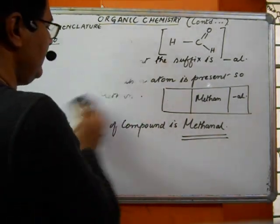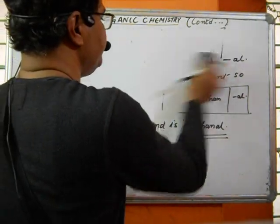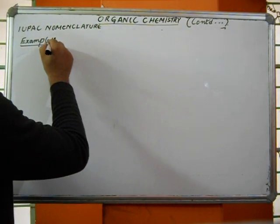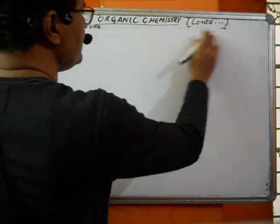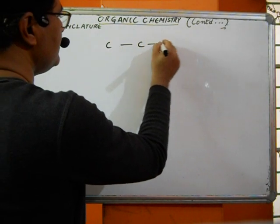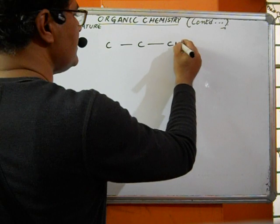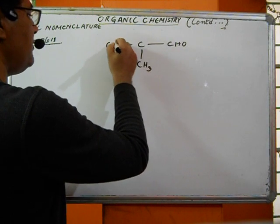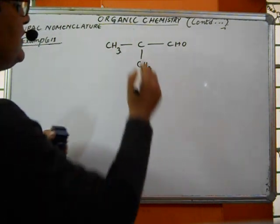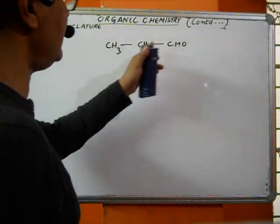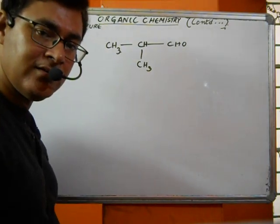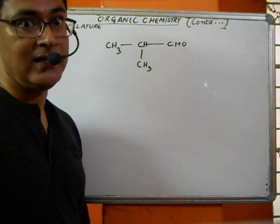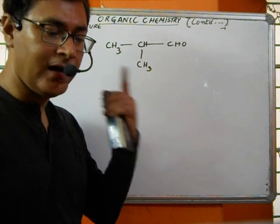Now we will carry on to understand some more compounds. Example 11 — let's do a branched one. We have a chain of three carbons with CHO at the end. I put a branch CH3 here and another CH3 here, giving CH3-CH(CH3)-CH2-CHO. My functional group here is -CHO, so the suffix is -al.